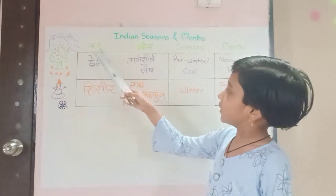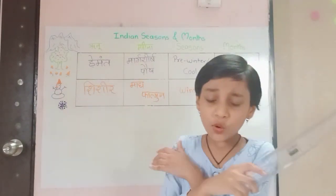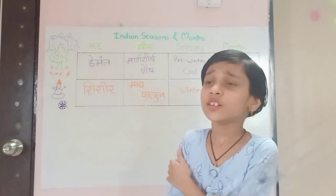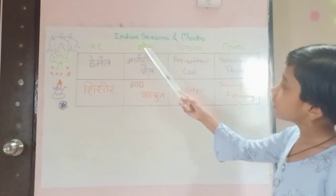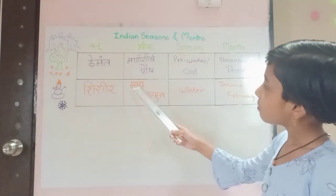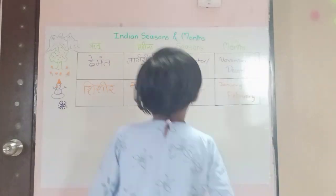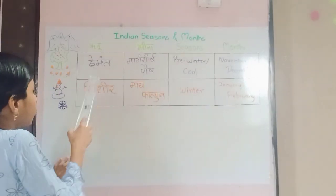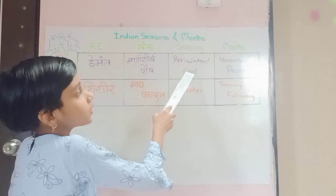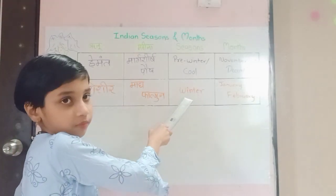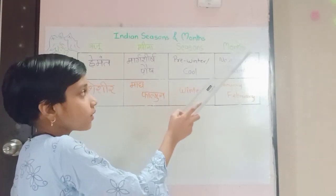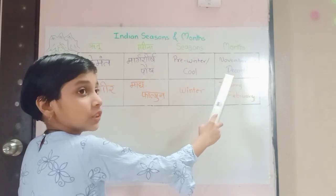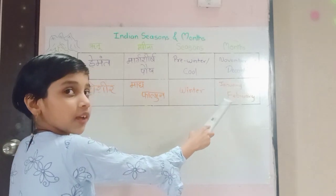Next Ritu is Shishir. It's feeling too cold! It falls in Mahina Magh and Phalgun. The English name for Shishir is Winter, which falls in January and February.